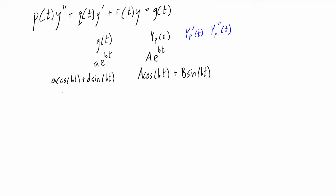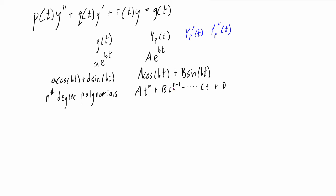The third family of g of t's this works for is nth degree polynomials. In this case we assume our particular solution is also an nth degree polynomial with undetermined coefficients — so something like a t to the n plus b t to the n minus 1, all the way down to ct plus d. We take the derivative once, take the derivative twice, substitute everything in, and simplify until we can determine all the undetermined coefficients A, B, C, D, and so on.